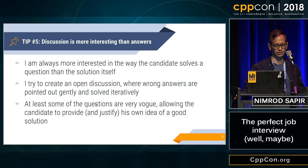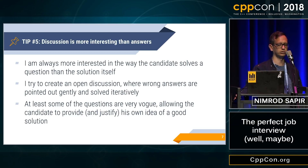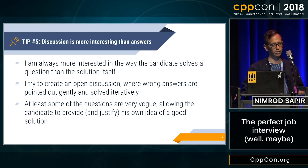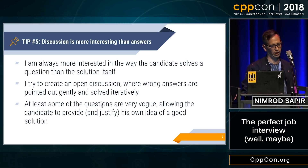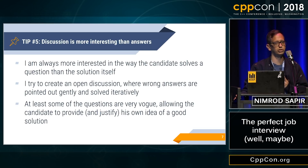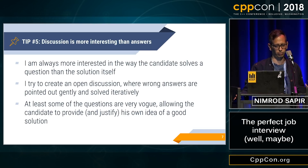My fifth tip is that the discussion is more interesting than the answers. I'm more interested in the way a candidate solves a question than the actual solution. I try to create open discussion, give feedback on wrong answers, and solve the question iteratively. I don't like when a candidate solves it perfectly on the first run — I'm trying to build this up as the test goes. At least some questions are intentionally vague, like 'design a good API.' This allows candidates to provide their own ideas. Even if I don't think it's the best solution, if they can justify it and show conviction, that's very good.